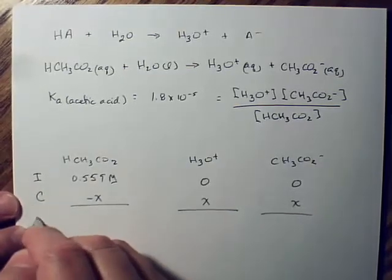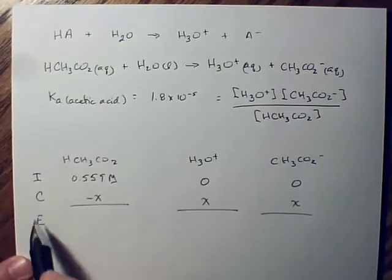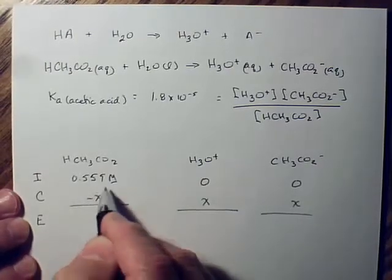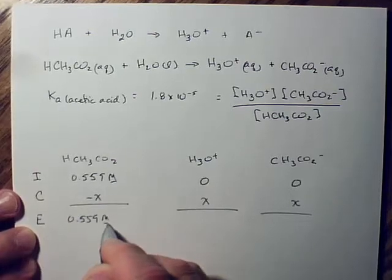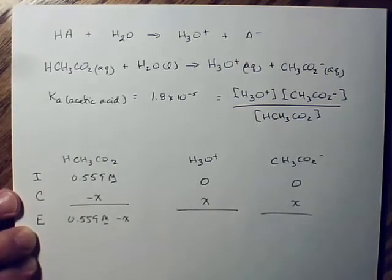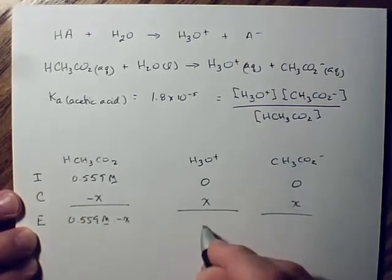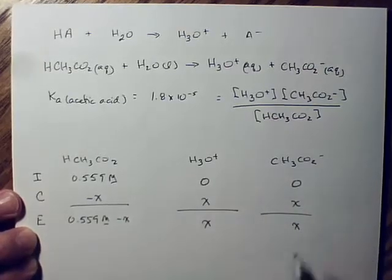At equilibrium then, ice, the amount of this stuff we have is 0.559 molar minus x. The amount of hydronium ions we get is x and acetate ions is x.